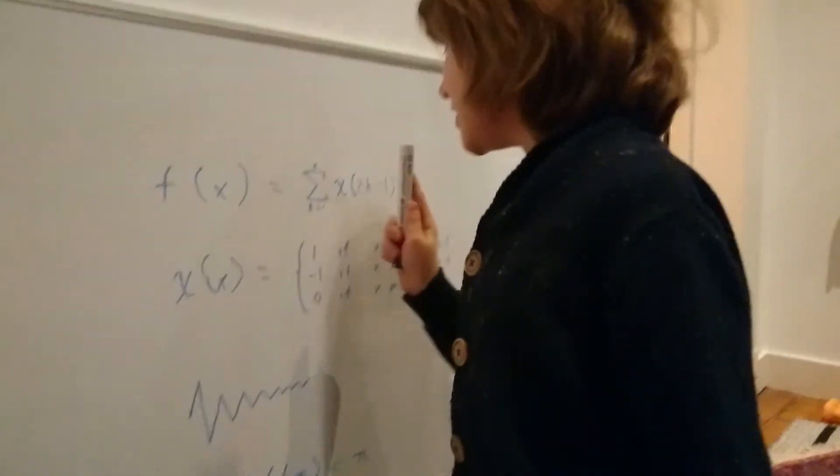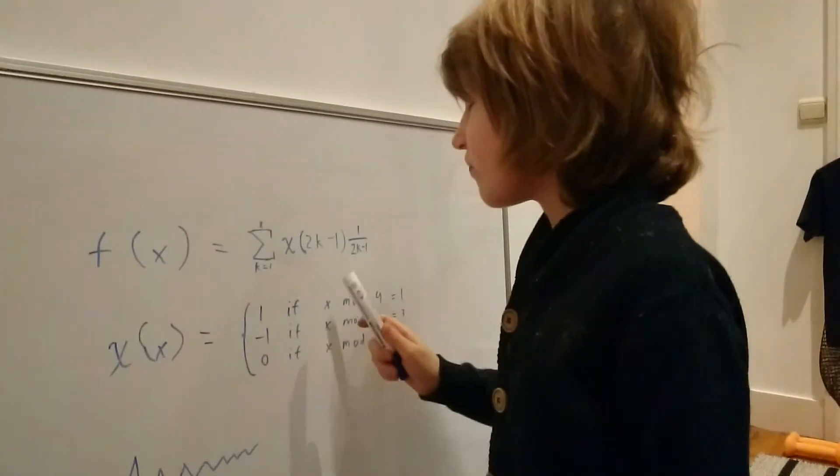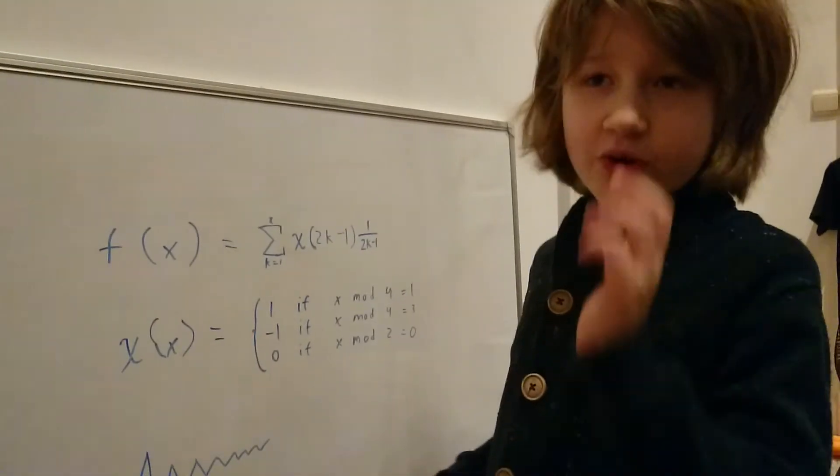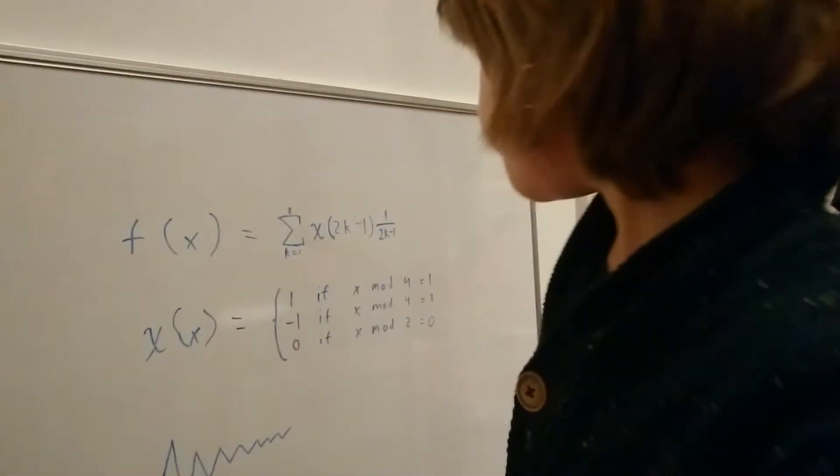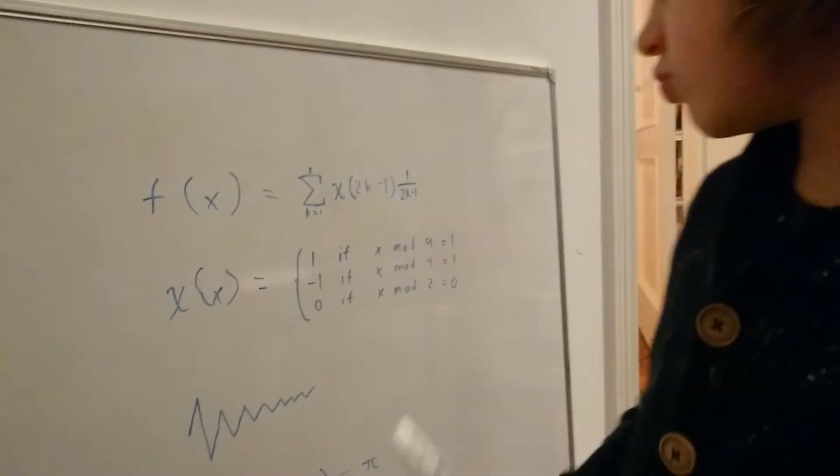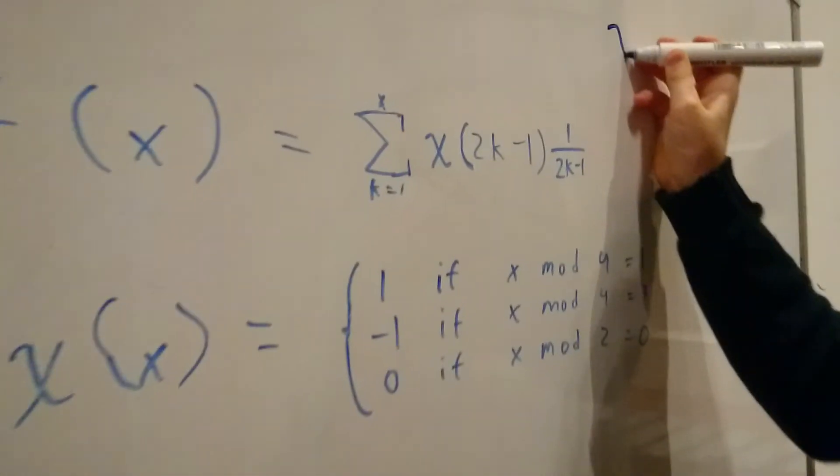So k equals 1 to x, and then we do chi of 2k minus 1.